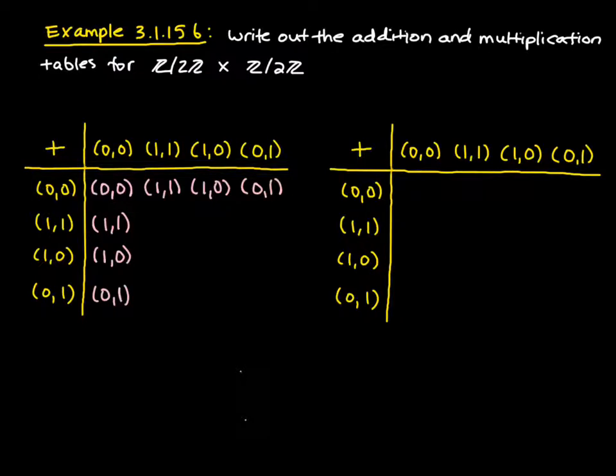So now let's fill in more of the table. So if I want to look at this second row, I'm going to add (1,1) to (1,1). So I'm going to add, that's going to be (2,2). But we're in Z2 cross Z2. So 2 is going to be equal to 0 in both of those rings.